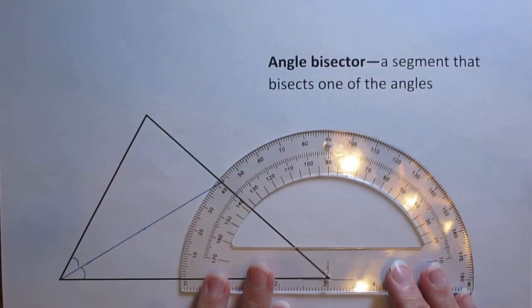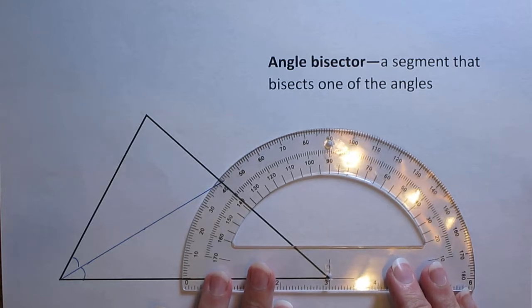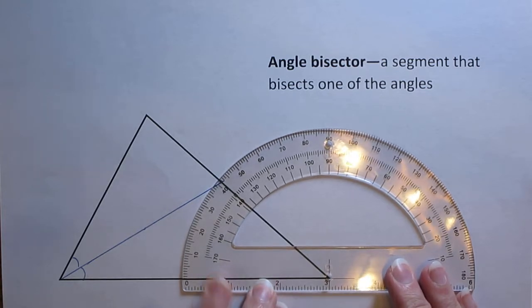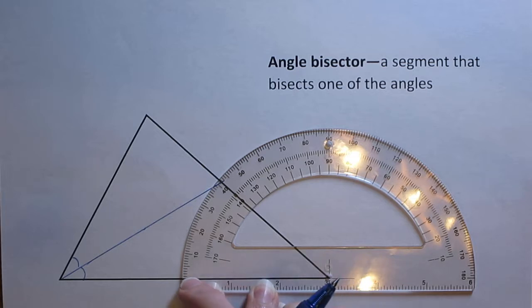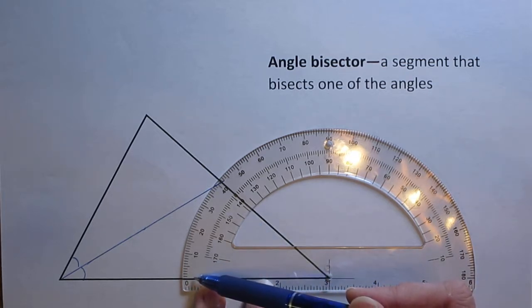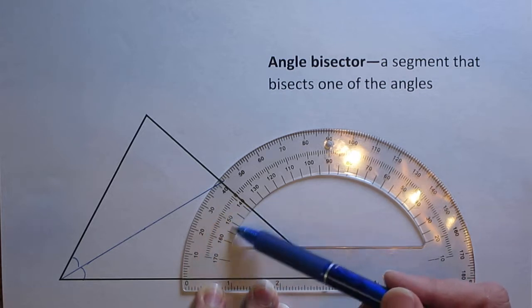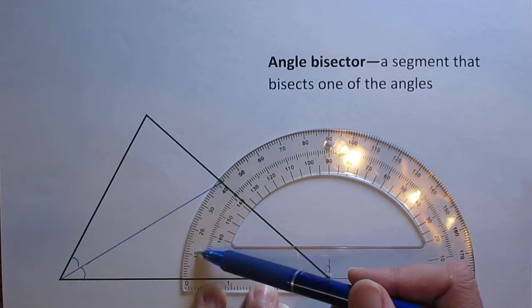Take my protractor, line it up with the vertex, line it up with the side of the triangle. Again, I'm starting at zero and I'm going to work my way up. I don't want the bigger numbers, I want to start at zero and work my way up with the smaller numbers.